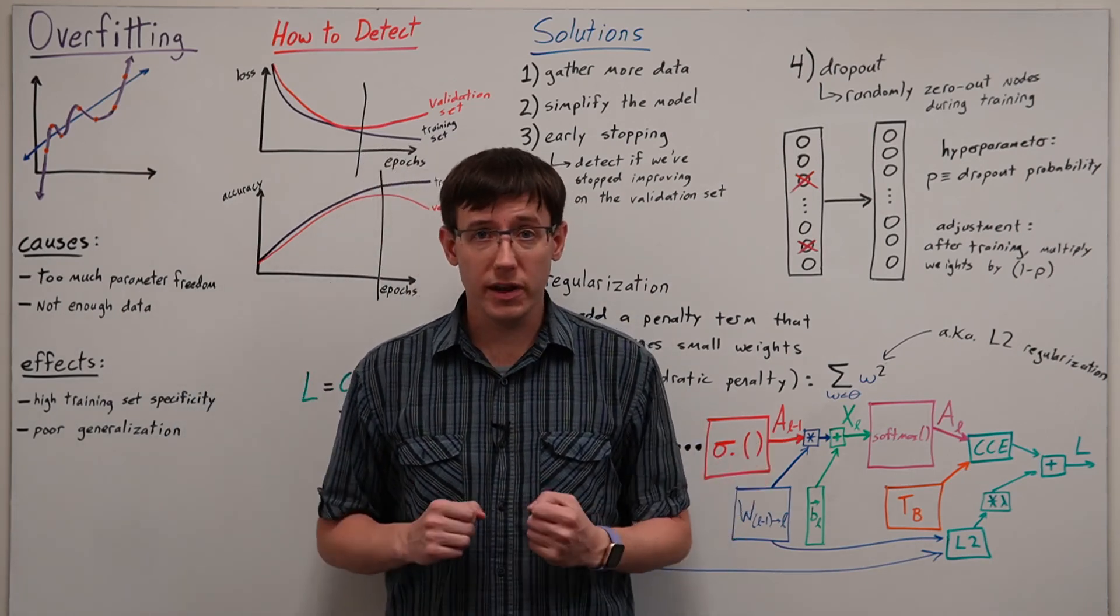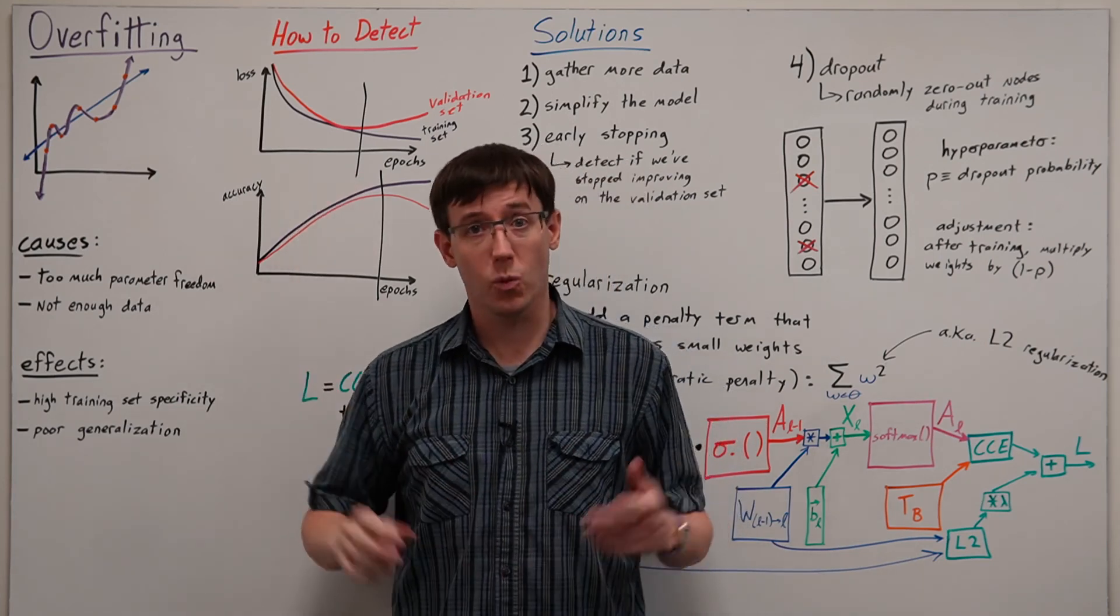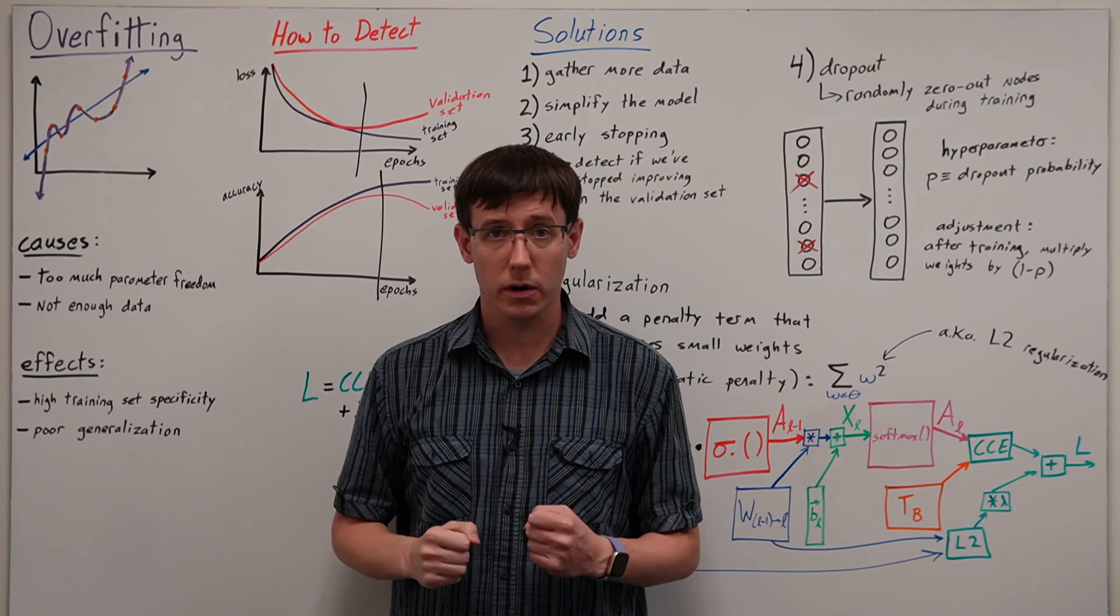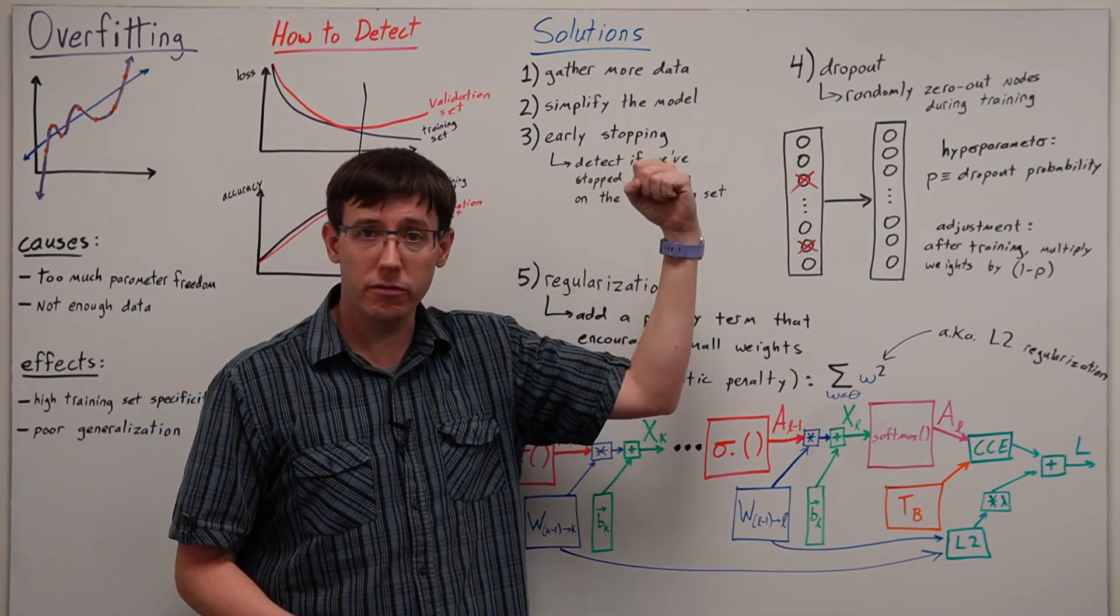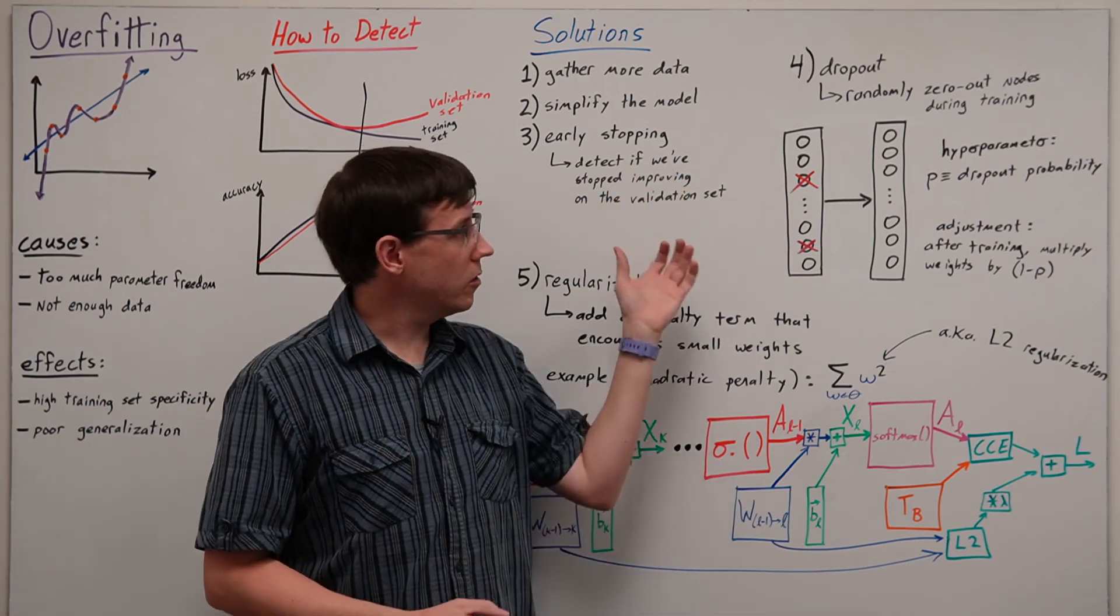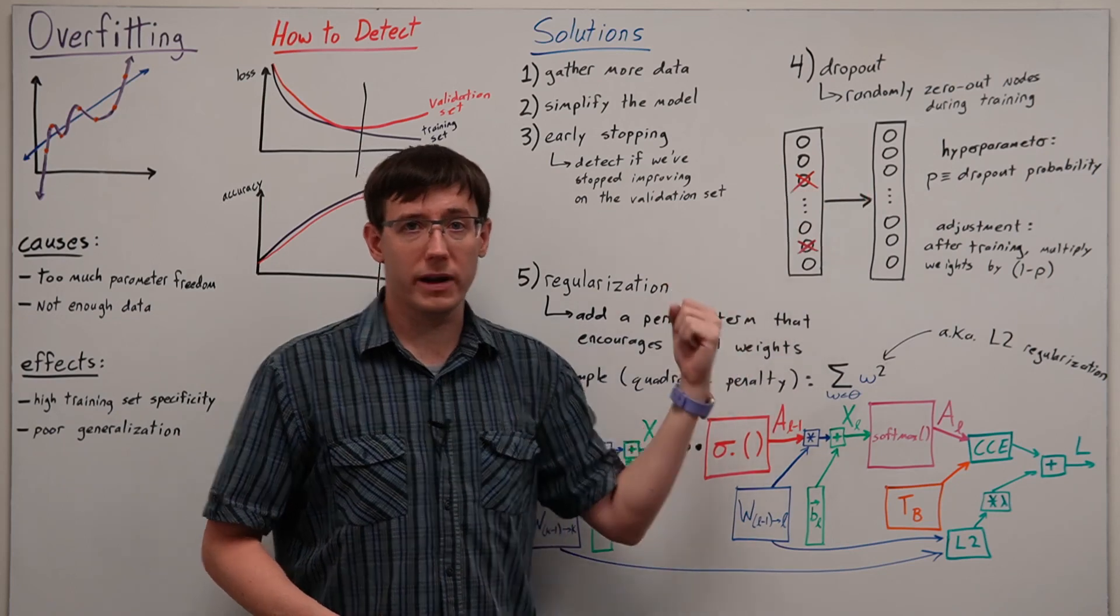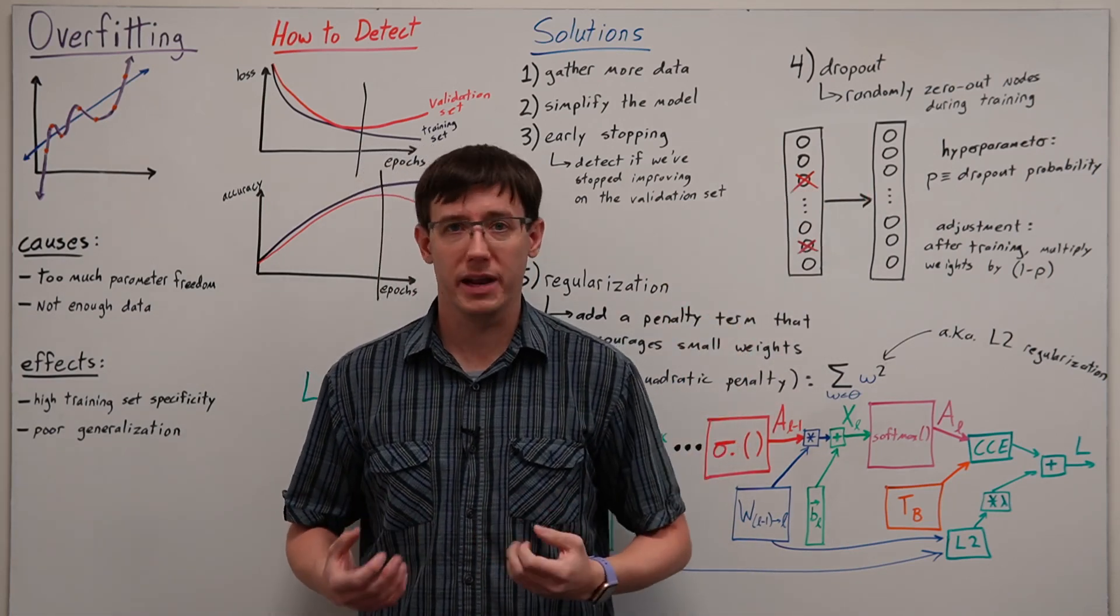Overall, the lessons here are to keep an eye out for overfitting whenever you're training a neural network, and to think about how big is your model and how much data do you have, and then also to consider techniques like early stopping, dropout, and regularization if you think that your training will be prone to overfitting anyway. Thank you so much for watching.